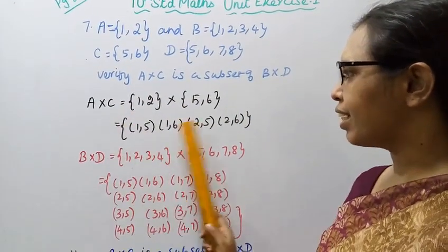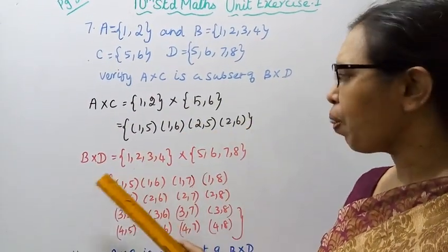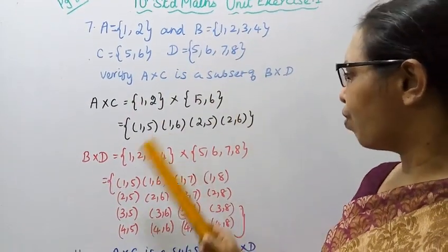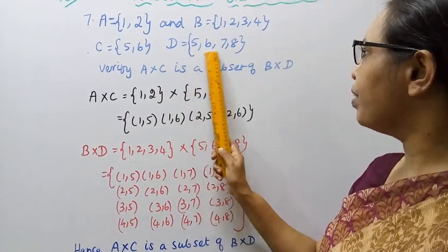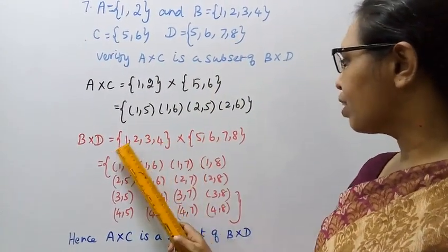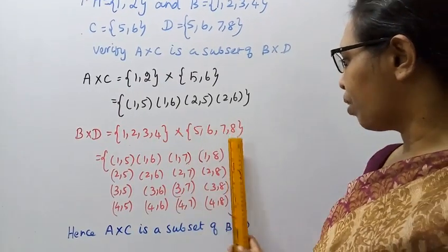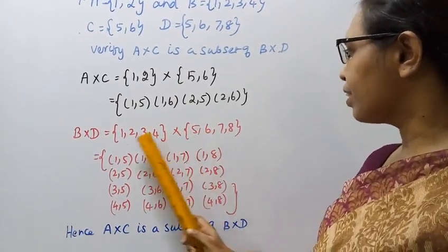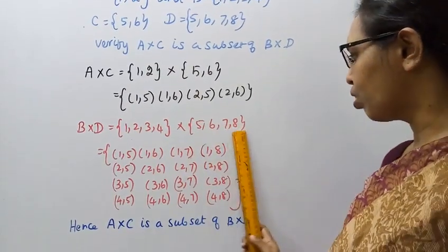B cross D: B equals 1,2,3,4 and D equals 5,6,7,8. Starting with 1,5, 1,6, 1,7, 1,8, then 2,5, 2,6, 2,7, 2,8.